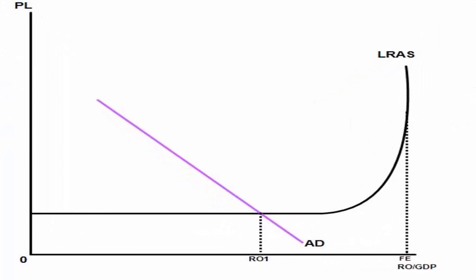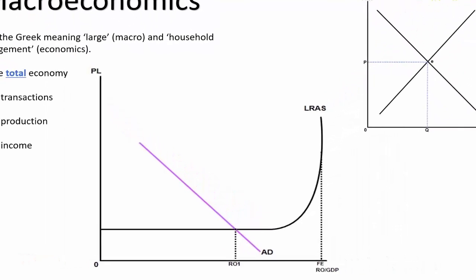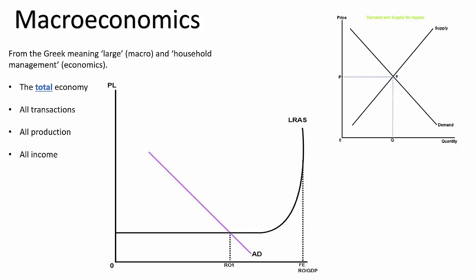So rather than using simple demand and supply analysis that's used in microeconomics, in macroeconomics we use aggregate demand analysis and aggregate supply analysis. So that's what AD stands for on that graph and that's what AS stands for on that graph. Aggregate just means that we totaled all of the demand and all of the supply together to give us a picture of the whole demand and supply in the national economy over a given period of time.